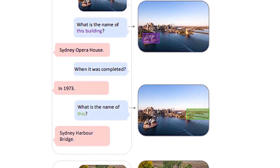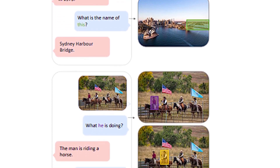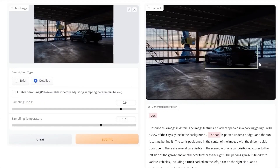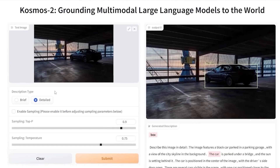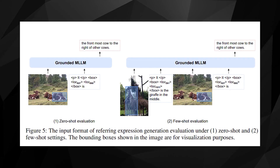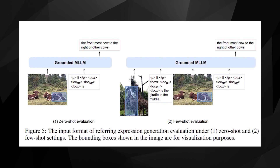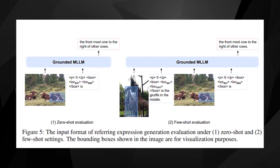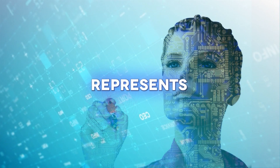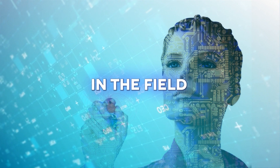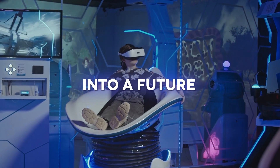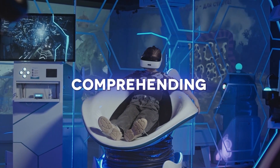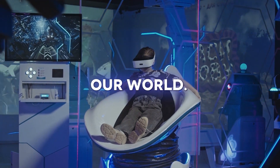However, there are still limitations that need to be acknowledged and resolved. For example, Cosmos 2 struggles to interpret images with low resolution or abstract visual content. Additionally, it sometimes becomes confused when attempting to describe a scene or infer context. Nevertheless, Cosmos 2 represents a significant advancement in the field of AI, providing a glimpse into a future where AI is not only capable of processing text, but also comprehending the diverse aspects of our world.